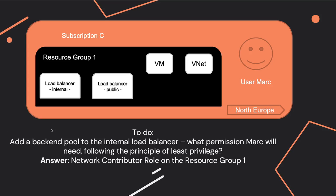For the next question, we have a scenario with a subscription and a resource group containing several resources: load balancers — an internal one and a public one — as well as VMs, VNets, and so on. The question is: what permissions will Mark need if he wants to configure a backend pool on the internal load balancer? In Azure, you always want to assign the least privilege. In this case, he will need the Network Contributor role on resource group 1.